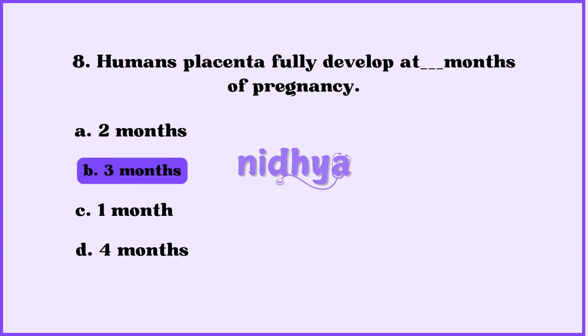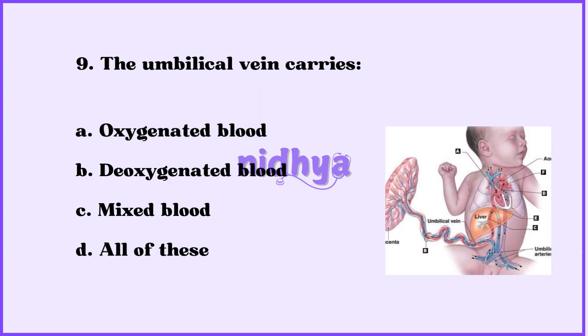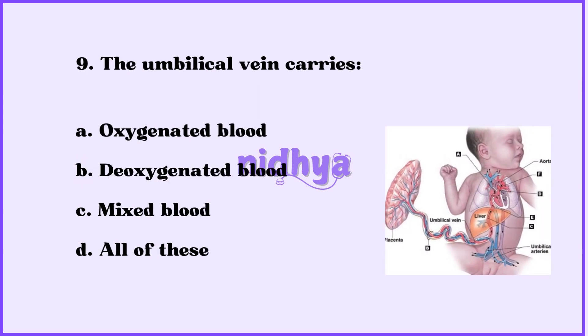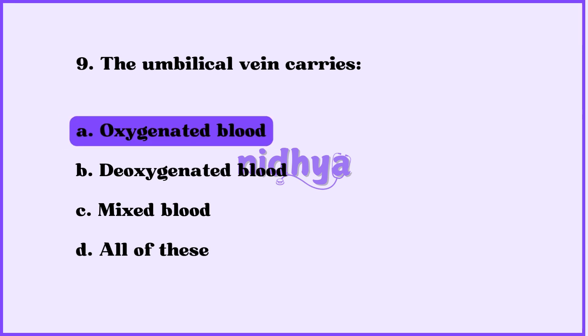Ninth question: The umbilical vein carries — oxygenated blood, deoxygenated blood, mixed blood, or all of these? The answer is oxygenated blood.